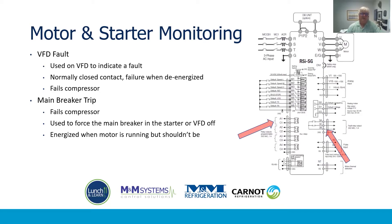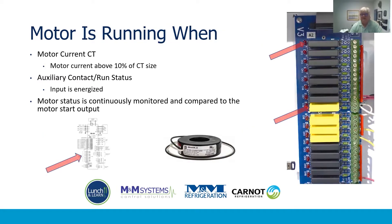We're always watching that run status as well. The main breaker trip is an output, and this is the last-ditch effort to make sure that the compressor stops if it's running when we don't think it's supposed to be. We've started putting these on VFDs because of concerns about the SCRs on the output, and we've started carrying it over to other compressors as well. We are constantly looking at the current transformers to decide whether we have motor current, and the magic threshold is 10% of the CT size. So if you've got a 400-to-5 CT and you're pulling 40 amps, that's 10% of 400, and that means we've decided the motor is running.